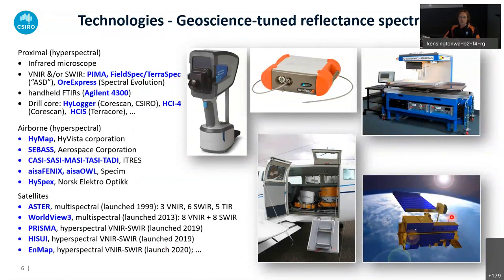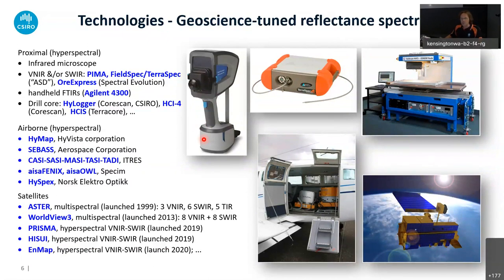On slide six, I've listed some example technologies with pictures. We've got proximal sensing instruments with hyperspectral resolution — lots of bands collected across the spectrum. Here's a TerraSpec from Malvern Panalytical, but also the handheld FTIR from Agilent, which we've been using quite a lot at CSIRO over the past two years — for example for lithium deposits. On the top right is a picture of the HiLogger, which collects visible near shortwave and thermal infrared from drill core trays and drill chips.